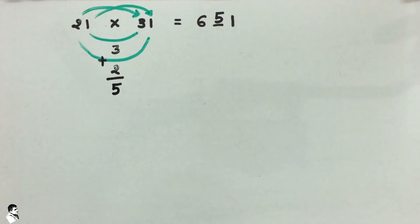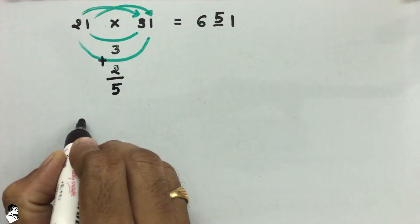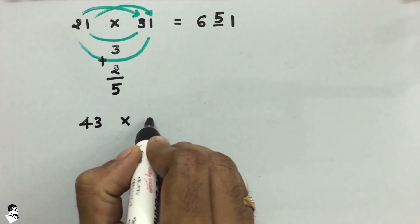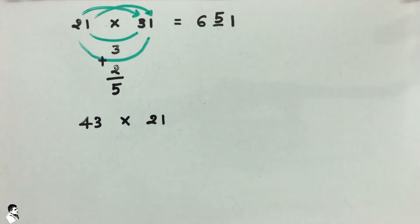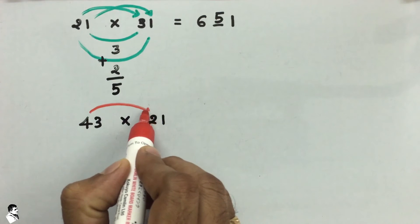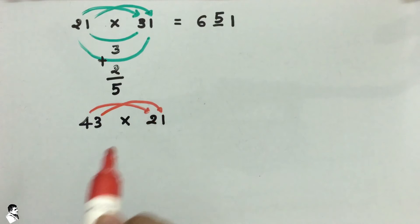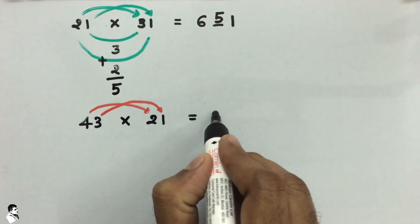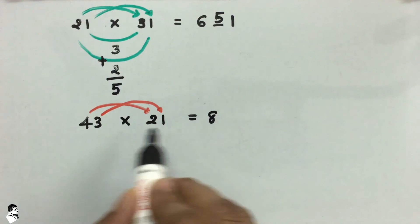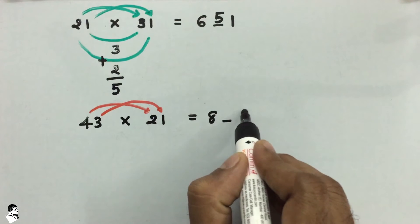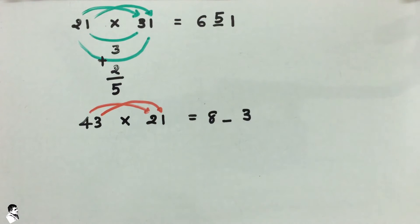Now take a second example: 43 multiplied by 21. Here we do the outer multiplications first: 4 into 2 is 8, and 3 into 1 is 3. Make some space for the middle number and write down 3.